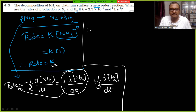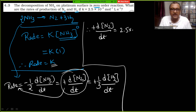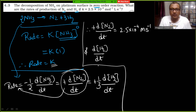Rate of production of N₂: since Z = d[N₂]/dt and Z = K, therefore d[N₂]/dt = K = 2.5×10⁻⁴ mol L⁻¹ s⁻¹. For H₂ production: (1/3)(d[H₂]/dt) = K, so d[H₂]/dt = 3K = 3 × 2.5×10⁻⁴.